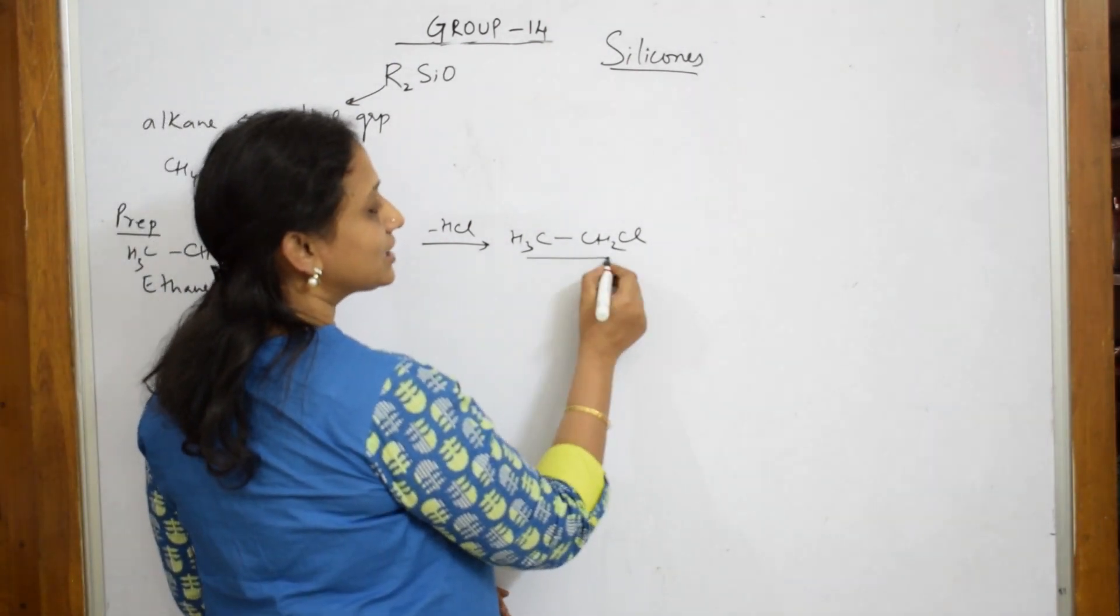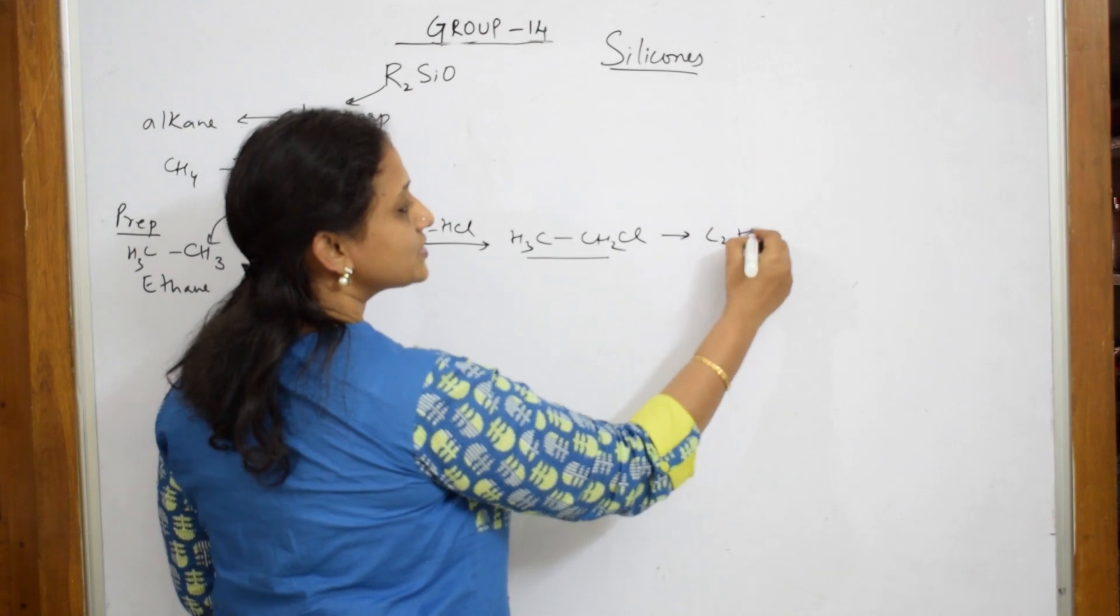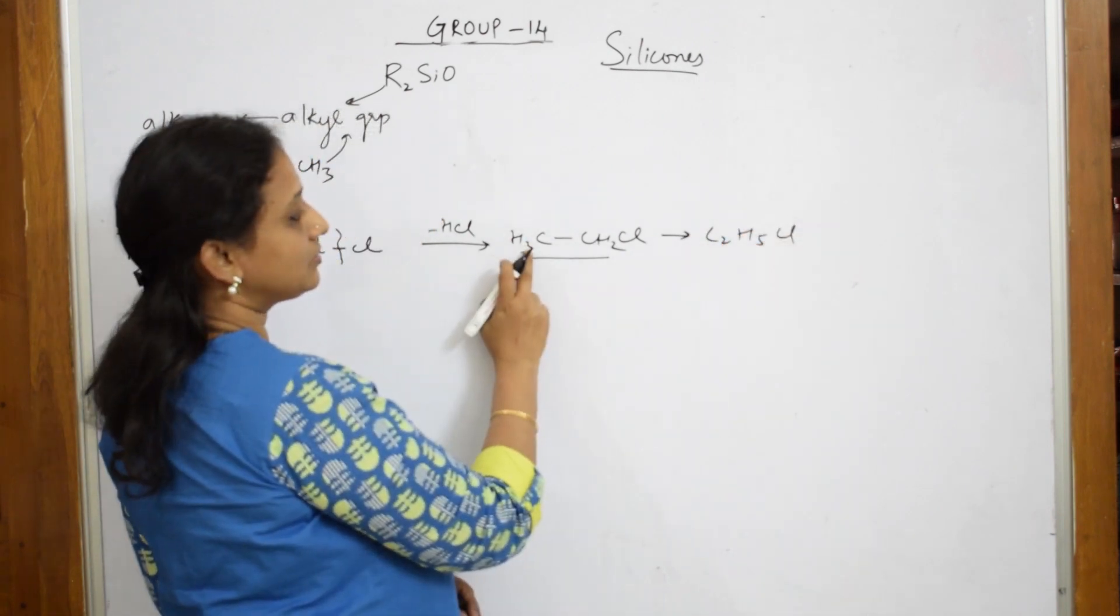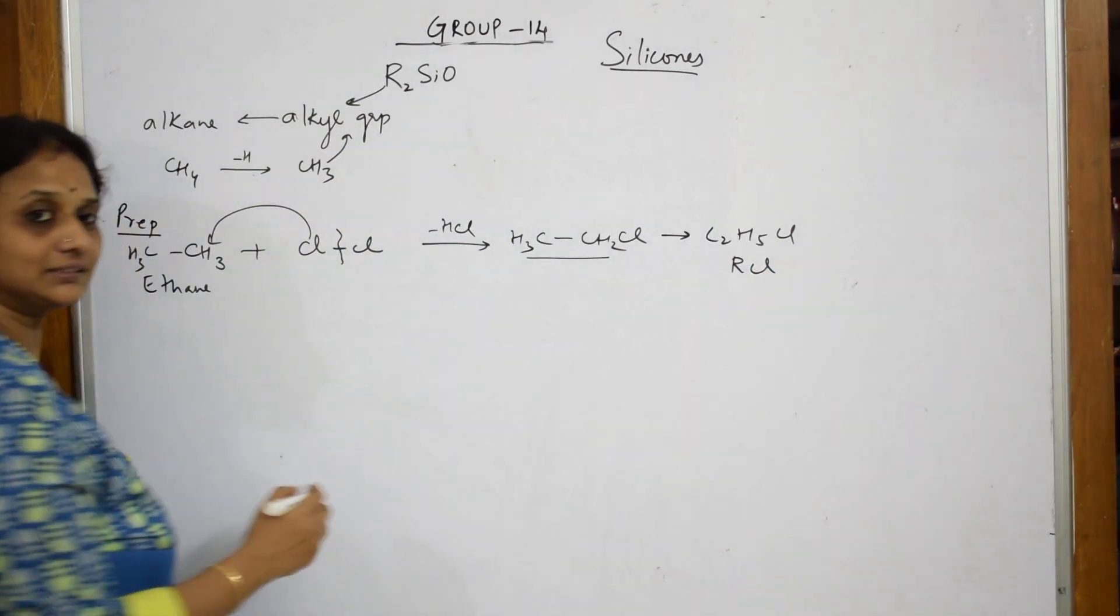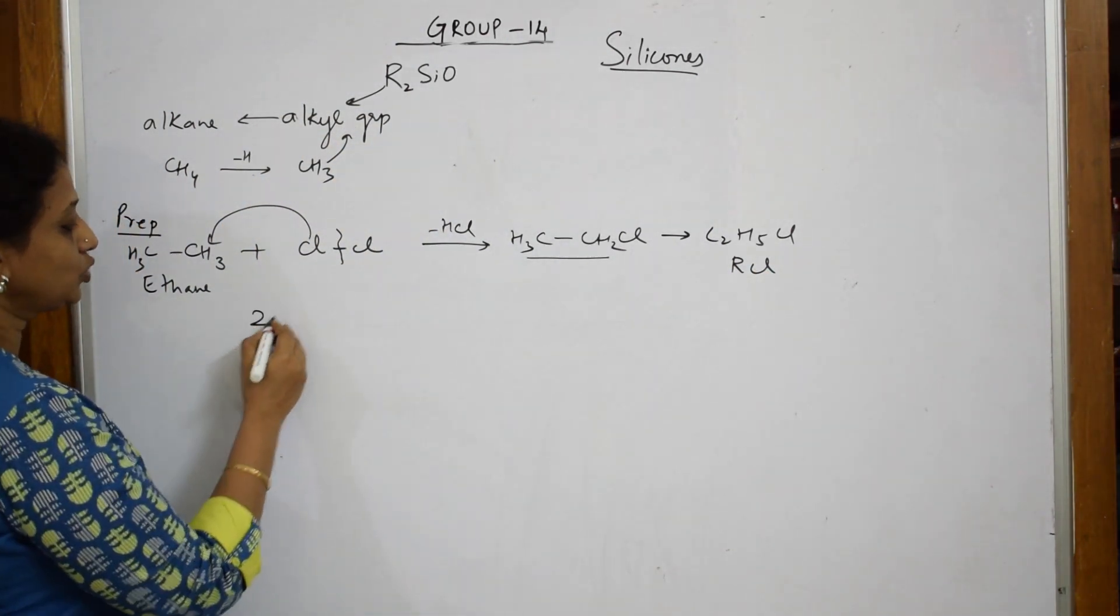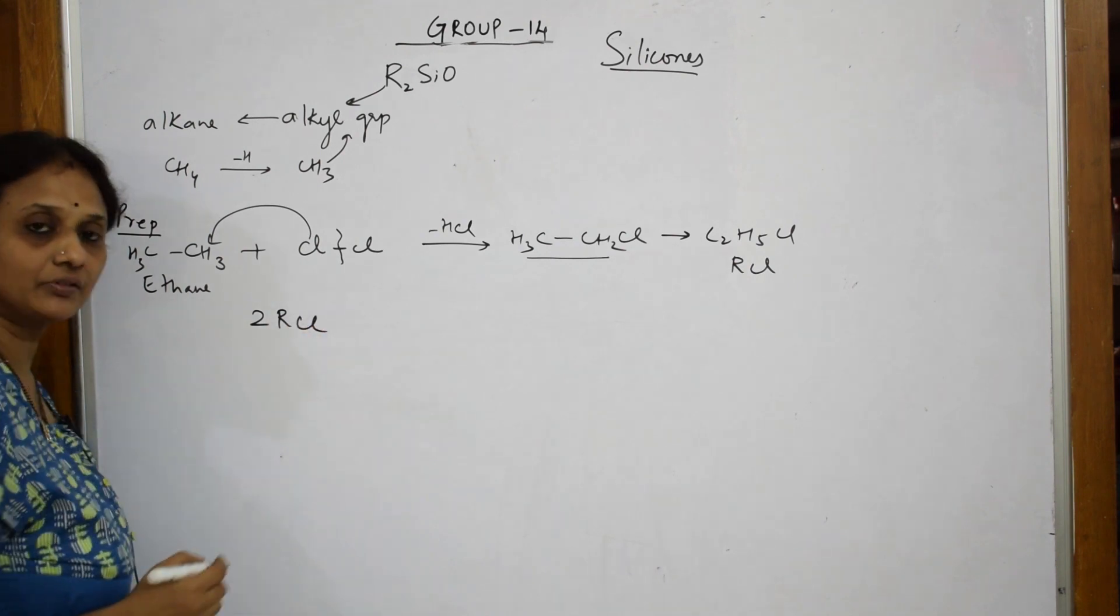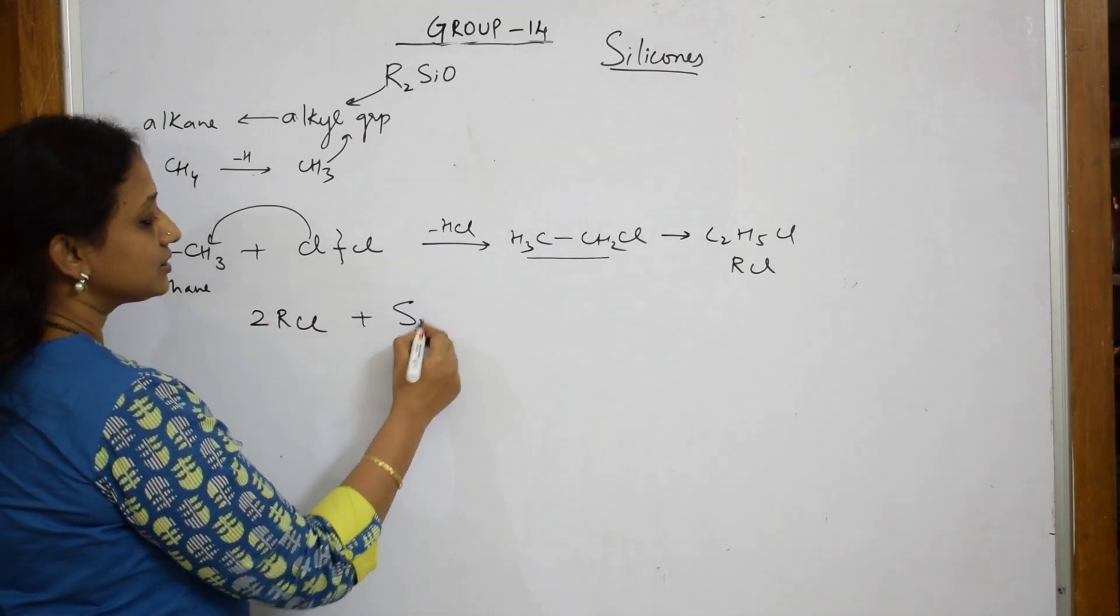This is alkyl. Now, it is nothing but C2H5Cl. So, can I write it as RCl? So, now I have got this RCl. Now, what am I going to do? I am going to take two moles of RCl. Now, you are going to combine it with silicon.